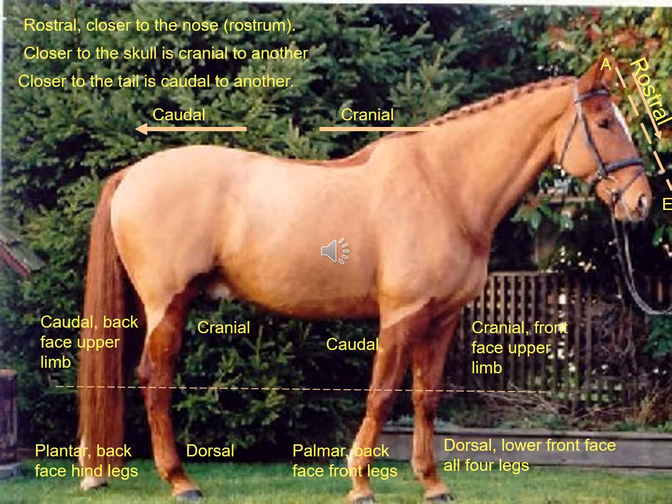The key thing to remember on this slide is the change of naming below the knee on the hock. This is, of course, because the study of the horse is based off the study of the human body, so everything below the knee is actually the hand and then the finger, and everything below the hock is the foot and the toe.